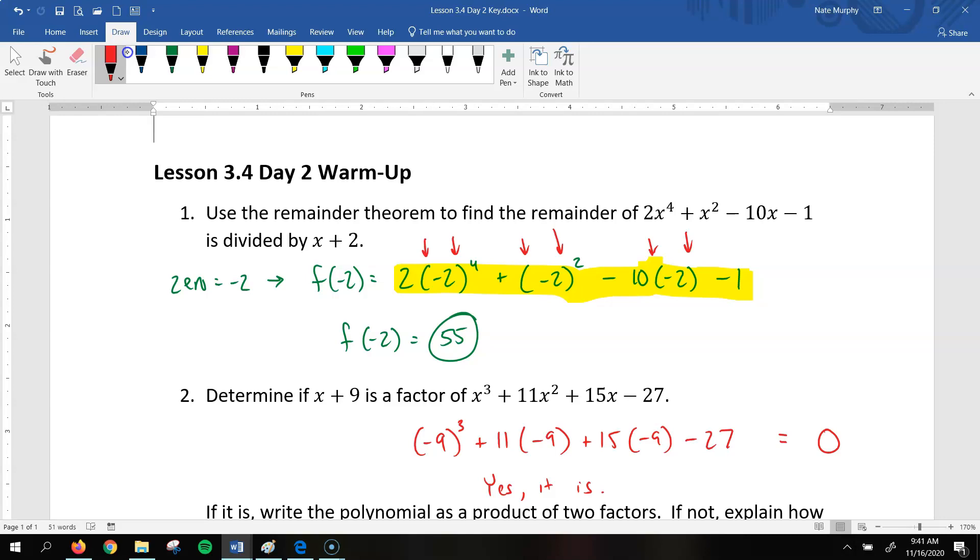Determine if x plus 9 is a factor of the polynomial. And so the same idea. We're going to put the 0 in. So in this case, the 0 would be negative 9. Because if you set x plus 9 equal to 0 and solve it, we get negative 9. And so to see if this is a factor, you will get a remainder of 0. So we're going to put negative 9 in here. Again, make sure that you use parentheses.